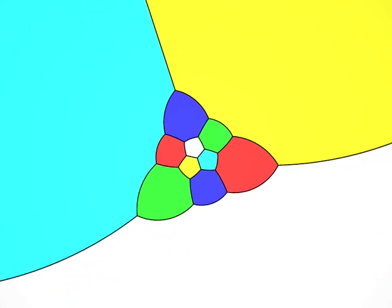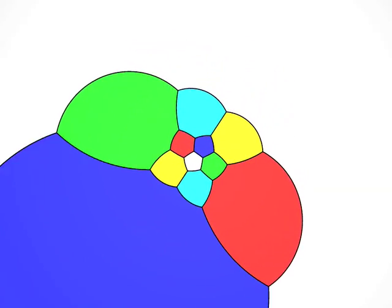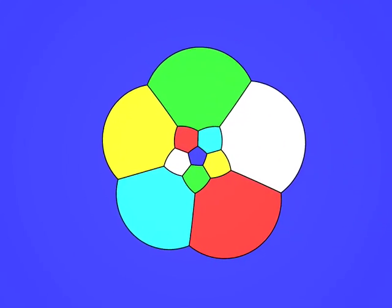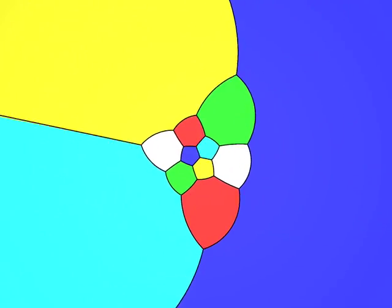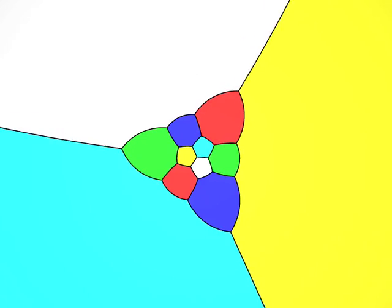Let's look at the dodecahedron. Each face is a pentagon. If we count them, there are 12 faces. Three edges start at each vertex.